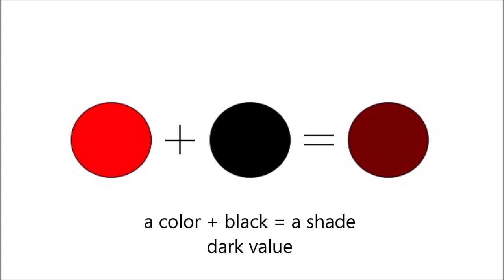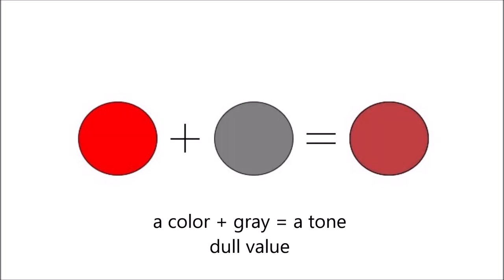A shade is a color mixed with black, or a dark value. And a tone is a color mixed with gray, or a dull value.